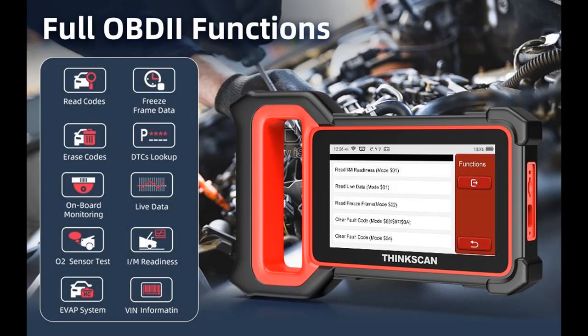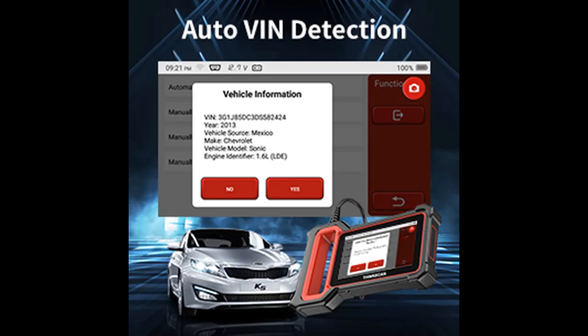It allows you to retrieve the definition of diagnostic trouble codes from an abundant DTC database for 12-volt cars, SUVs, vans, light trucks, and pickups. You can choose the battery voltage menu to test the current voltage of the vehicle's battery and see battery health status directly. The tablet features a 6000mAh battery with more than 8 hours of battery life.